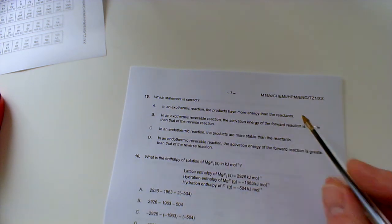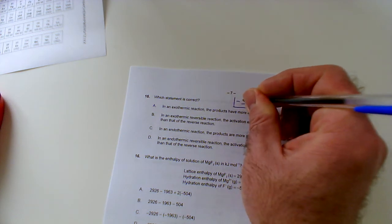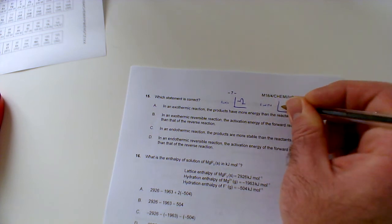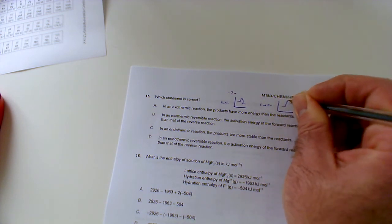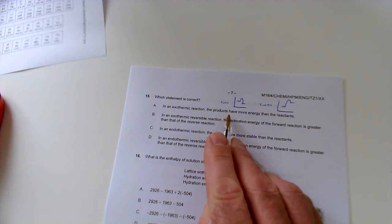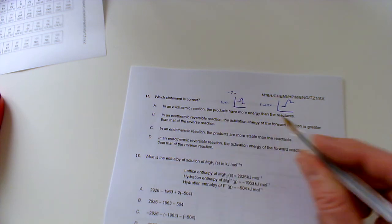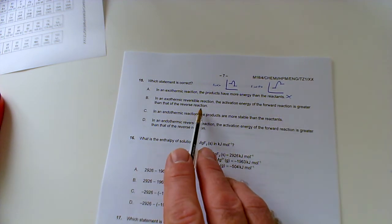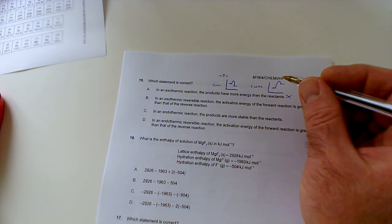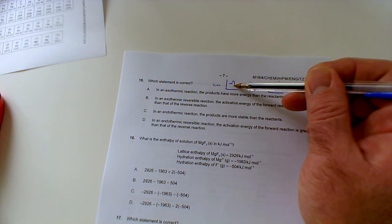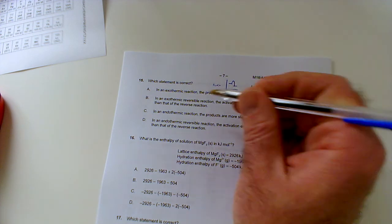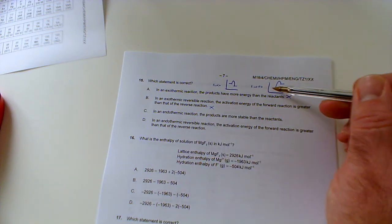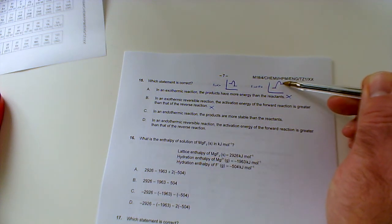Number 15: which statement is correct? In an exothermic reaction the products have more energy than the reactants. What might help if we sketch an exothermic reaction. That looks like that, so that's exo, whereas endo would be like this. In an exothermic reaction the products have more energy than the reactants? Well they don't, they're lower in energy than the reactants so it's not that one. In an exothermic reversible reaction the activation energy of the forward reaction is greater than that of the reverse reaction. Well no, it's smaller. So it's only up to there whereas the reverse reaction is up to there, so it's not that one.